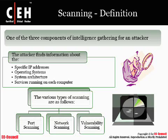First off, we can break scanning into three types: port scanning, commonly referred to as vertical scanning; network scanning, which is often referred to as horizontal scanning; and then vulnerability scanning. What we could be trying to find out is specific IP addresses, operating systems, the system architecture, and services running on each machine.